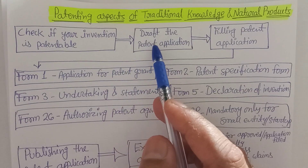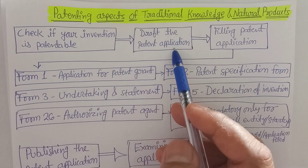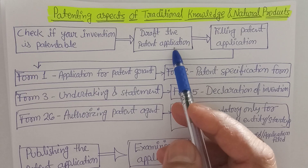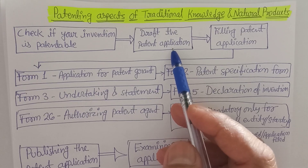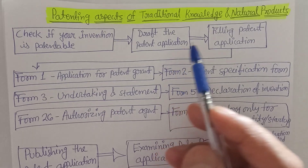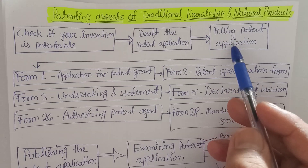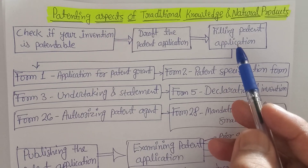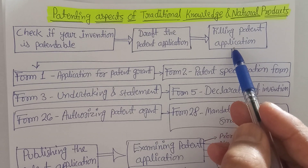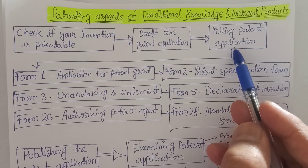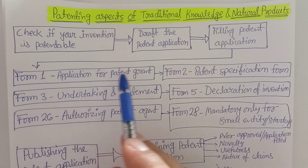The second step, if it is patentable, is to draft the patent application. What information is required to go for a patent? The third step is filing the patent application, which is available online nowadays. There are several forms we need to fill in under this third step.